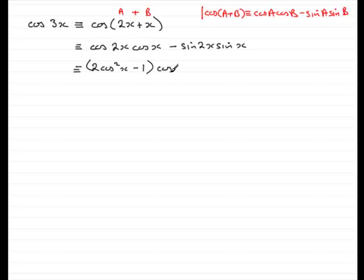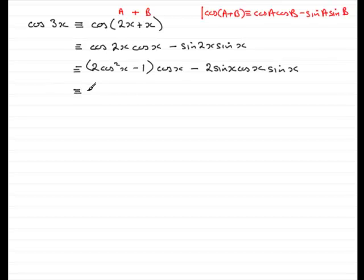And then we've got this cos(x) on the end. For sin(2x), we should know that is 2sin(x)cos(x). Remember the identity for sin(2a): 2sin(a)cos(a). So if a is x, we've got 2sin(x)cos(x), and then we've got that sin(x) on the end. If we expand the bracket, we've got 2cos³(x) minus cos(x). And taking this term, we've got sin(x) times sin(x), so that's 2sin²(x), and then we've got the cos(x).